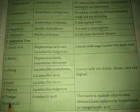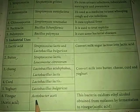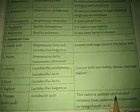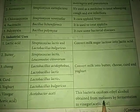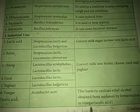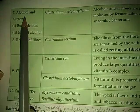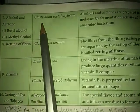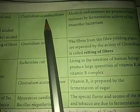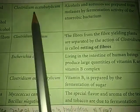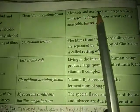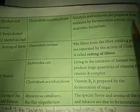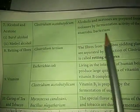Vinegar (acetic acid): the bacteria Acetobacter aceti oxidizes ethyl alcohol obtained from molasses by fermentation to produce vinegar (acetic acid). Alcohol and acetone — butyl alcohol and methyl alcohol — are produced by the anaerobic bacterium Clostridium acetobutylicum. The alcohols and acetone are prepared from molasses by fermentation activity of this anaerobic bacterium.